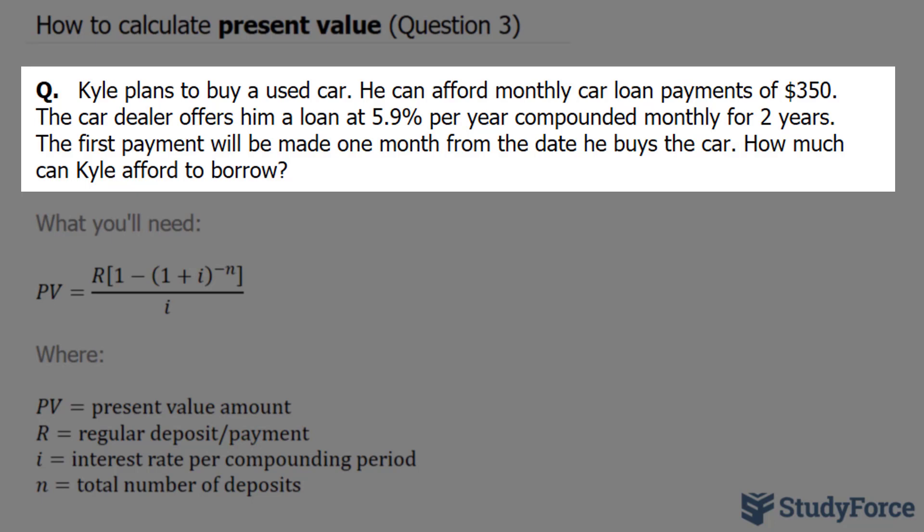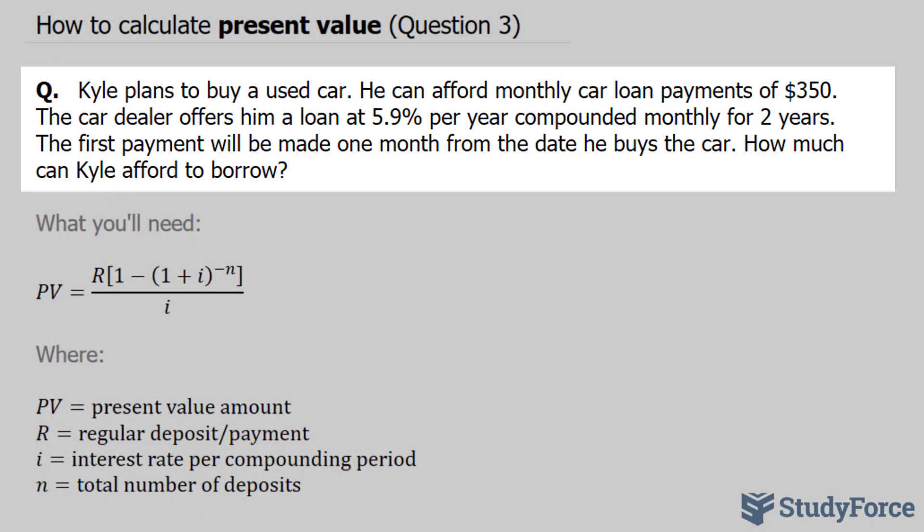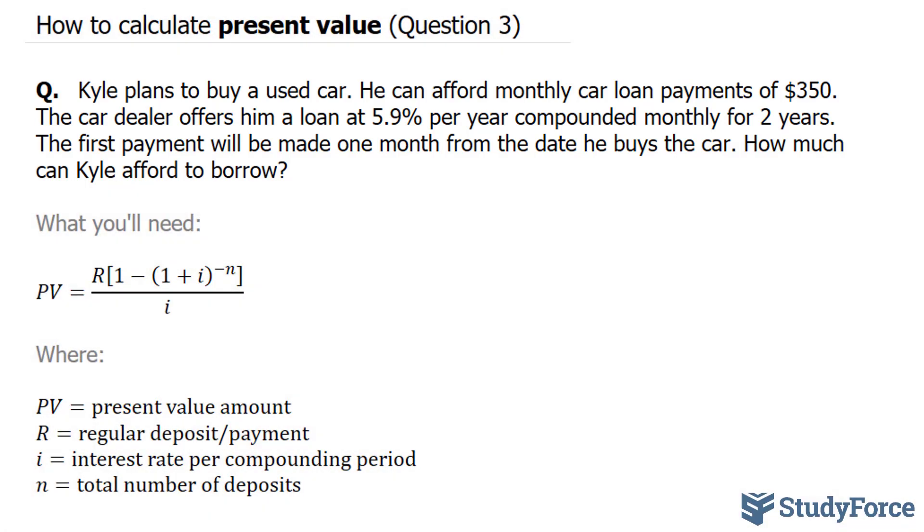How much can Kyle afford to borrow? What we are looking for here is present value, or the principal amount. We know that he can pay up to $350 every month. So our R value, which represents the regular deposit or payment, is $350.